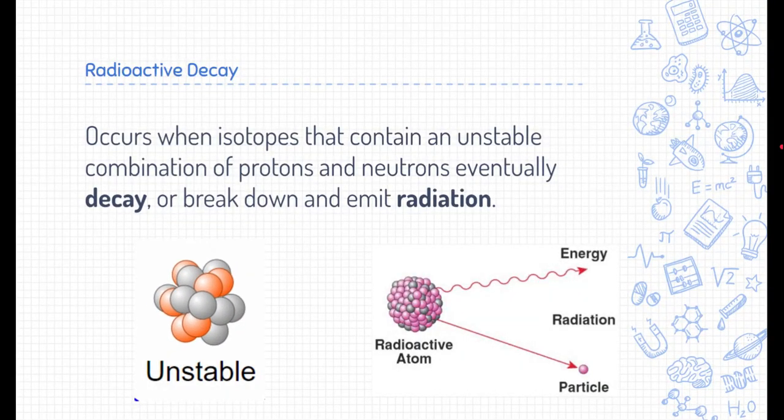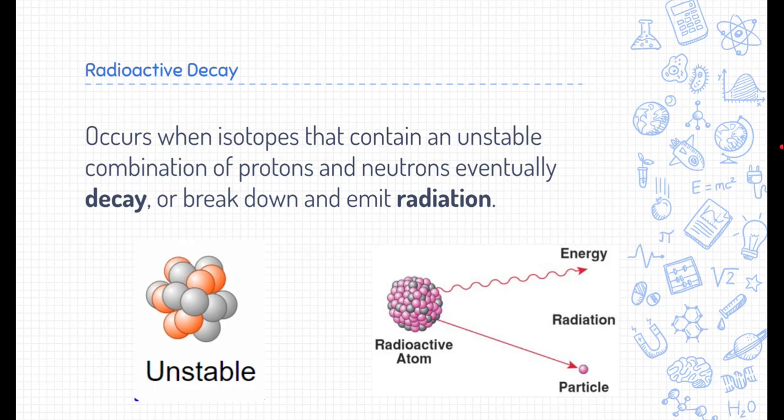The first type is radioactive decay. Radioactive decay relates to unstable isotopes. When isotopes are unstable, it's typically because there's an inappropriate ratio of neutrons to protons. Either there's too many neutrons or too few neutrons to be able to stabilize that nucleus.